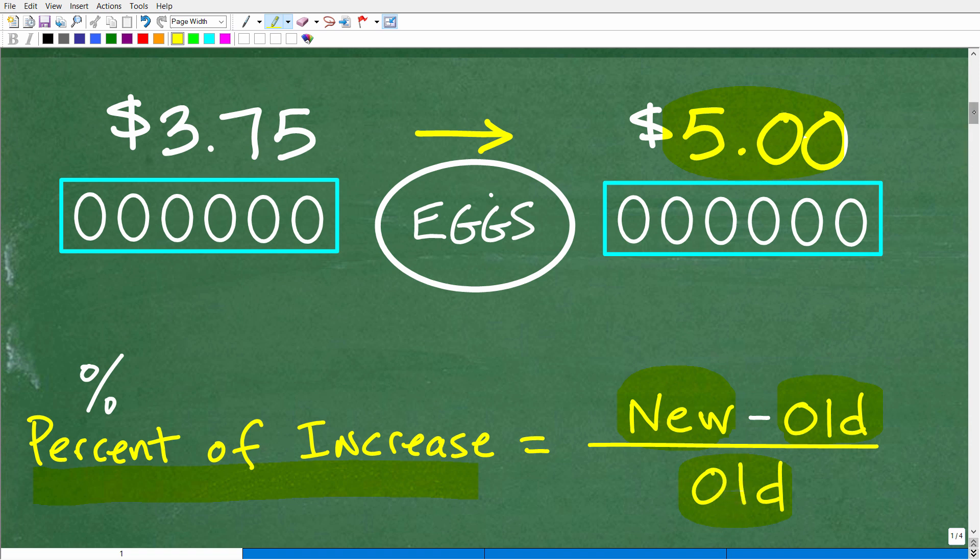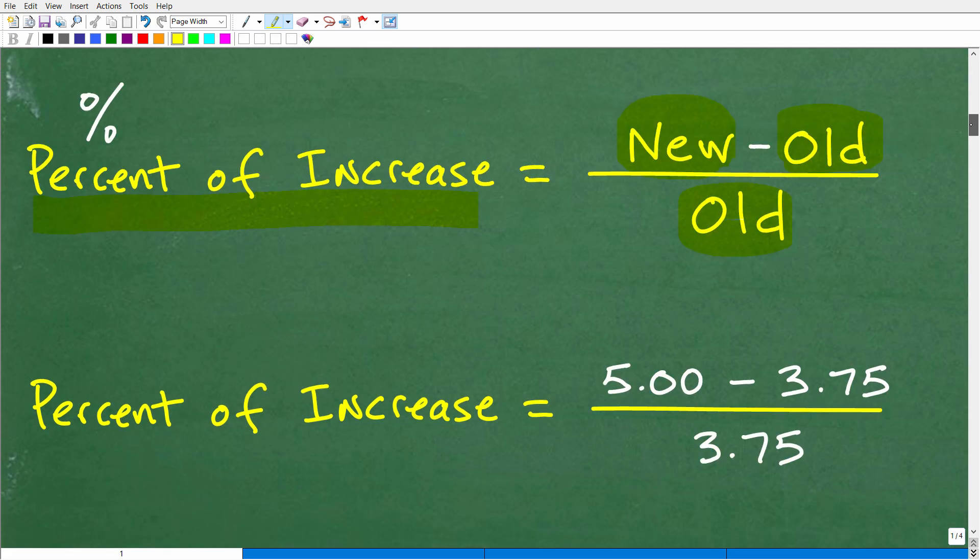But we need to subtract the old price away from the new price, right? So it's the new minus old, and then we're going to divide that by the old, okay? Let's go ahead and see how this works right now, and you'll see how we'll get a decimal, and then we'll turn that decimal into a percent. So what we're going to do is find the differences of the prices, right? So how much did the eggs go up? Well, we're going to start with our new price because we are talking, again, about increase. We don't want to have a negative value. These were flipped around. If we had $3.75 minus $5, you would have a negative number.